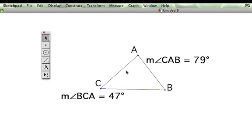We can also measure angle B. So we can call this either CBA, or ABC. And click measure and angle again. And angle ABC is 54 degrees.